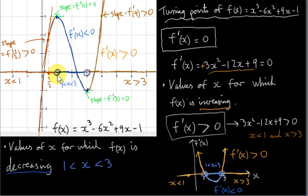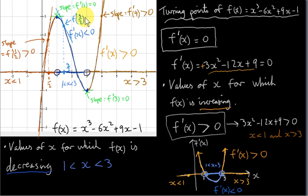Looking at the derivative at a particular value in this region, say x equals 3 over 2, we go up to the graph and consider the tangent. The slope of the tangent at x equals 3 over 2 is the derivative of the function at 3 over 2, and it is negative — the line is going in a downward direction. So we would be solving the inequality f prime of x less than 0 to find the values of x for which f(x) is decreasing.